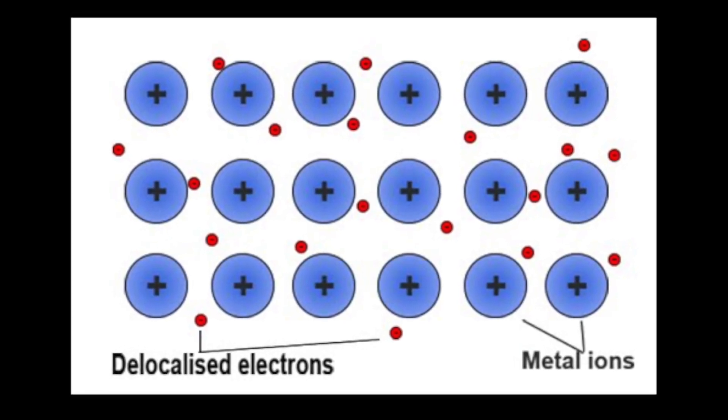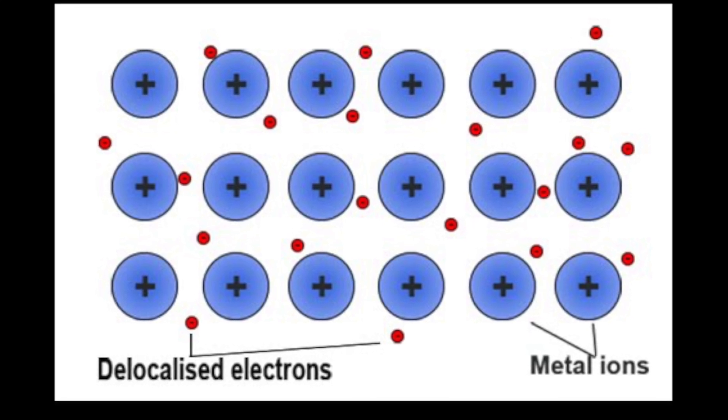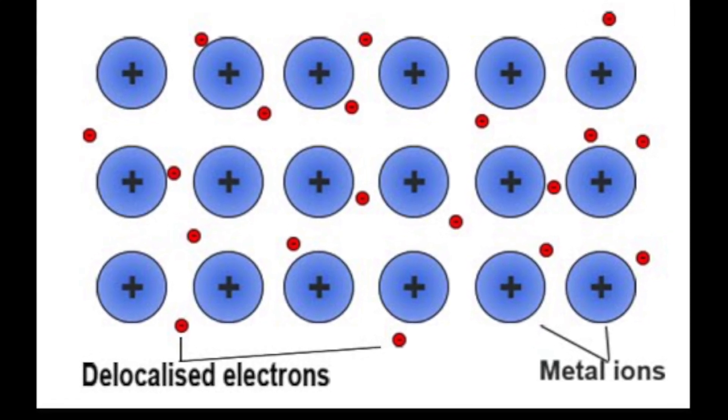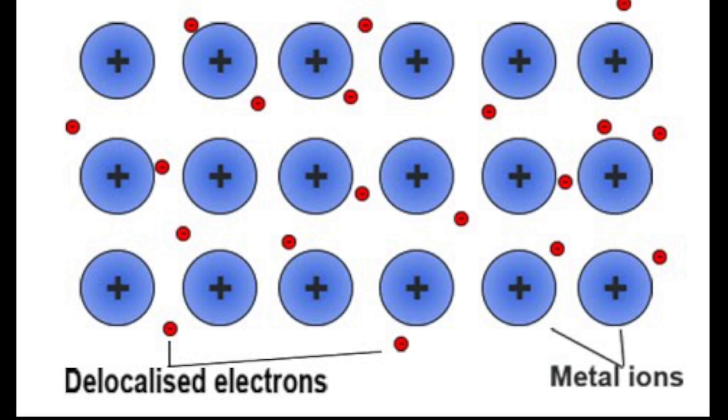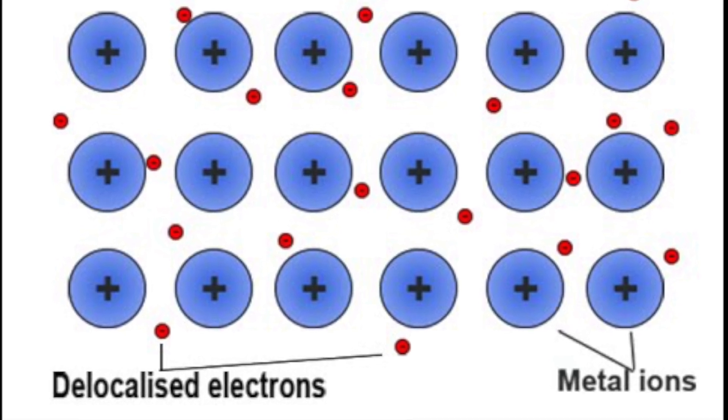Metallic bonding can be defined as the sharing in a lattice of positive metal ions of free electrons. The electrons then move freely throughout the space between the atomic nuclei.